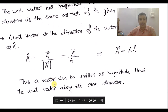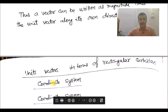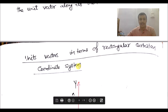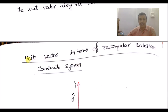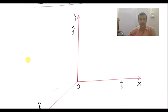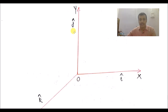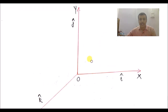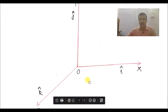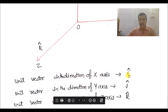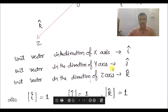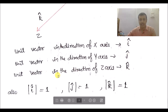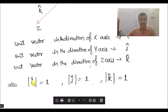In a rectangular Cartesian coordinate system, there are three unit vectors along the x-axis, y-axis, and z-axis. A unit vector in the direction of the x-axis is called i-cap, in the direction of the y-axis is called j-cap, and in the direction of the z-axis is called k-cap. The modulus of i-cap, j-cap, and k-cap are all equal to 1.